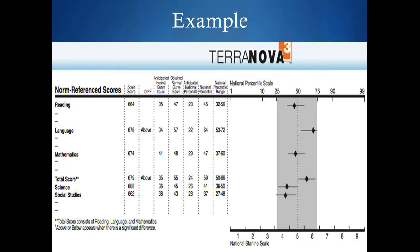To illustrate the interpretation of norm-referenced scores, I included a sample test report from the Terra Nova test, which is a norm-referenced test. For this particular student, the scale score for the language section is 678, which doesn't tell us much, so we need to look at the standardized scores to make comparisons. The percentile rank for the language score is 64, which means the student scored above or at the same level as 64% of students in the norm group, and if he takes the test again, the percentile rank would most likely fall somewhere between 53 and 72. This score is in the sixth stanine and is the highest score from all sections of the test, while the lowest score is on social studies, which is in the fourth stanine at the 37th percentile rank.